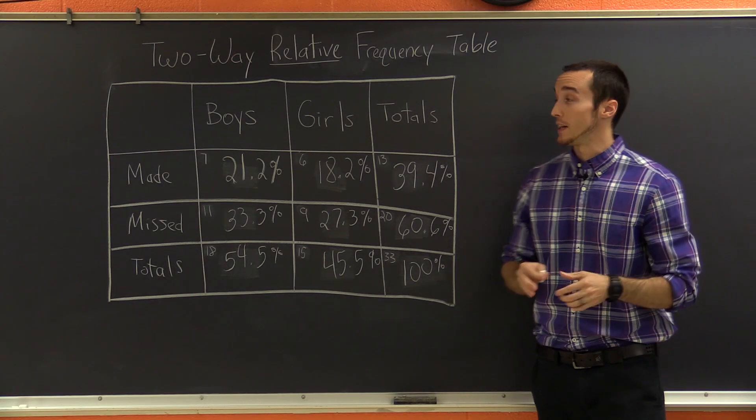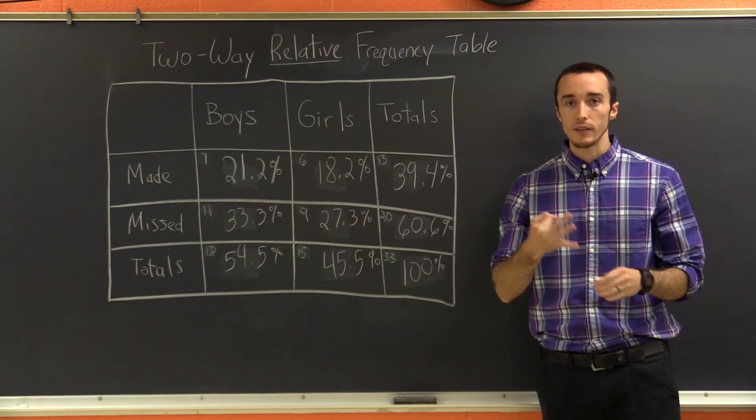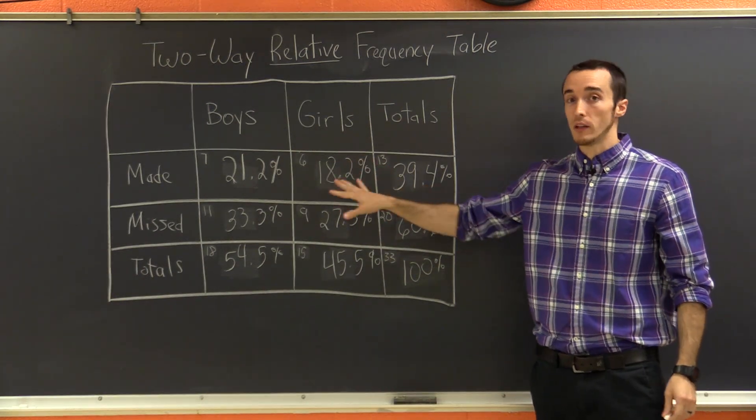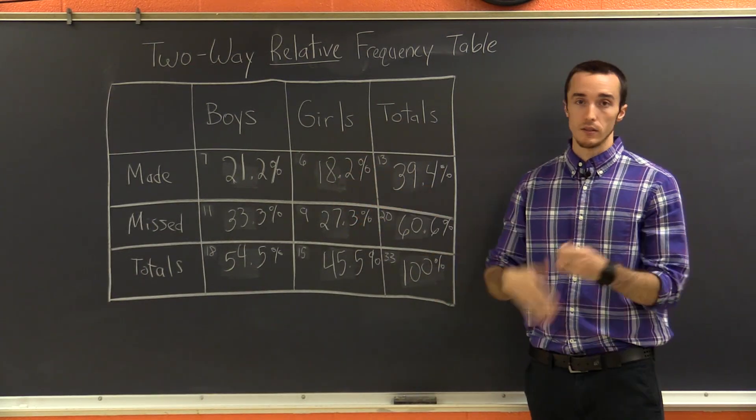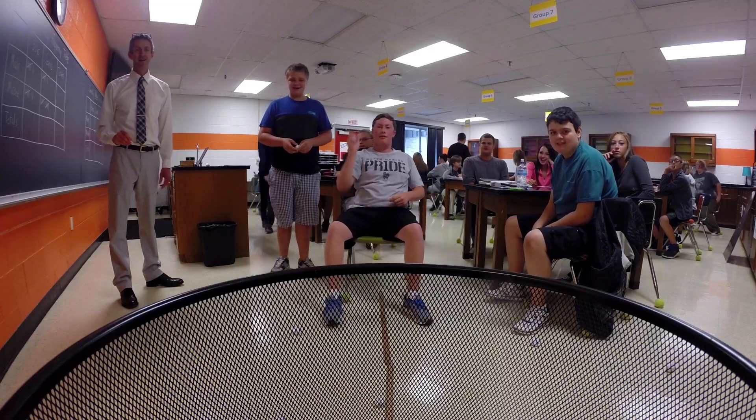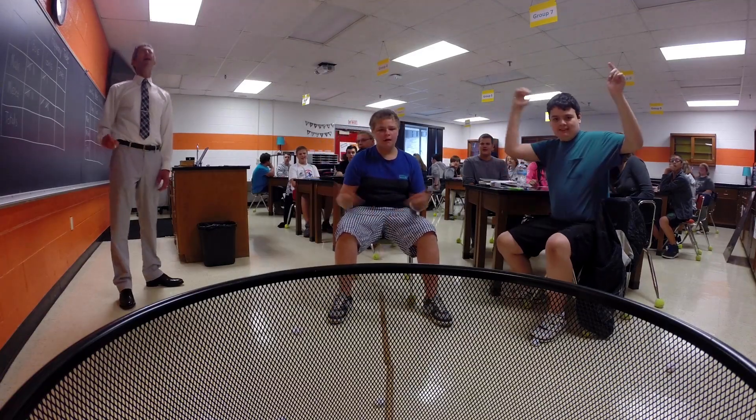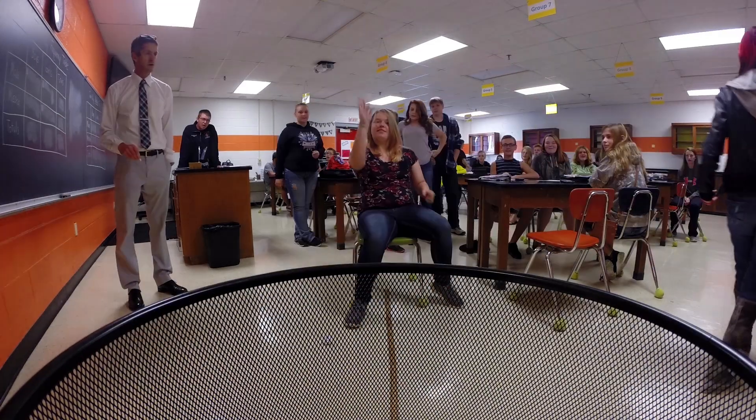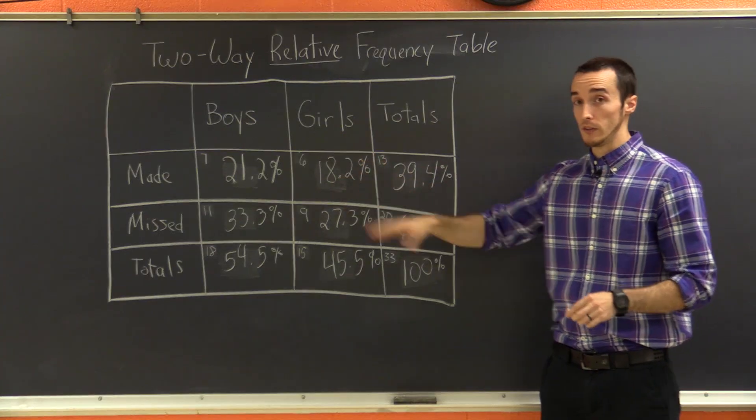Let's just hop straight into it. There's really three definitions that we're going to try to go over, and we're going to use this two-way relative frequency table to kind of learn about it. So this information is based on an experiment we did in class where we played this big game of Trashka Ball, and we kept track of how many people made and missed a basket, and we also did that with boys and girls.